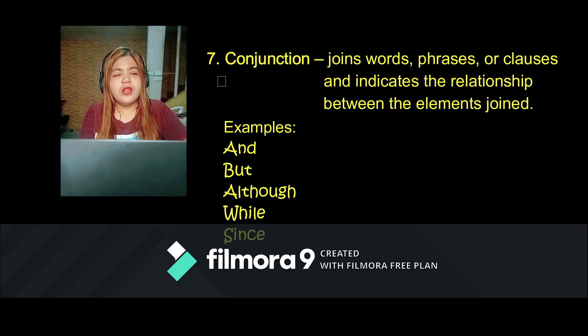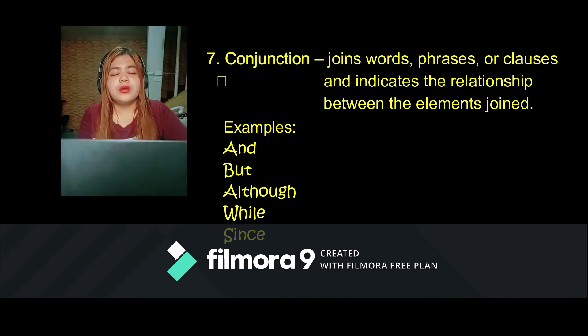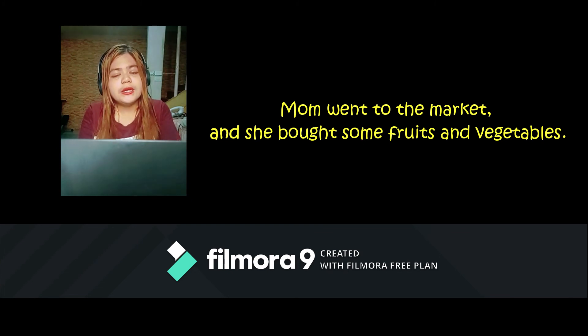Next, we have conjunction. Conjunction joins words, phrases, or clauses, and indicates the relationship between the elements joined. Examples are and, but, although, while, since. We have subordinate conjunctions and coordinating conjunctions — we're going to discuss these further later on. In a sentence: 'Mom went to the market and she bought some fruits and vegetables.' The word and is used to join these two ideas.